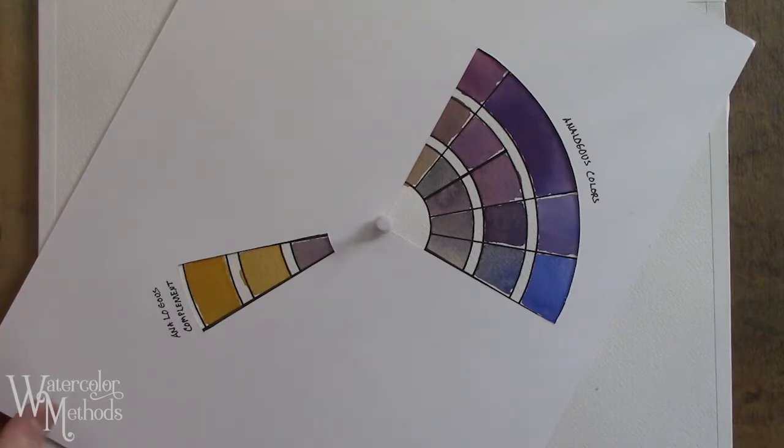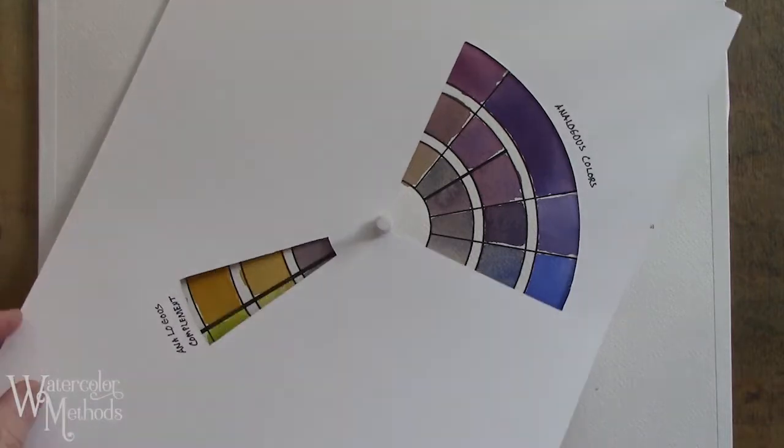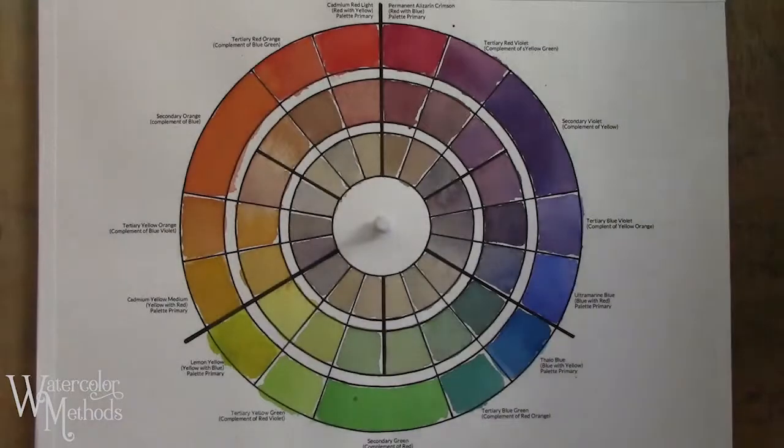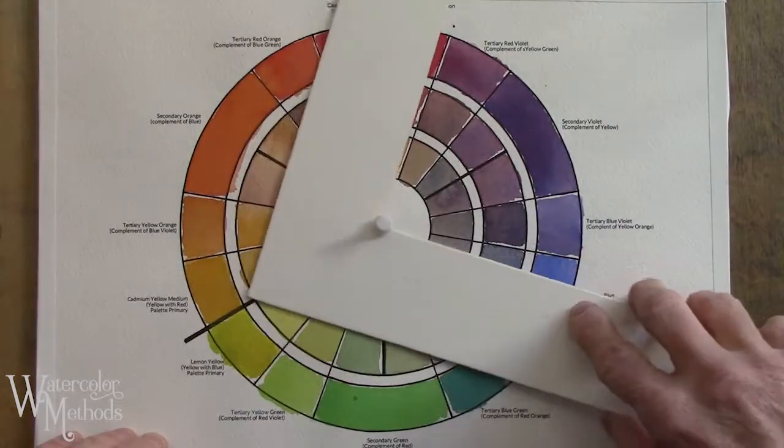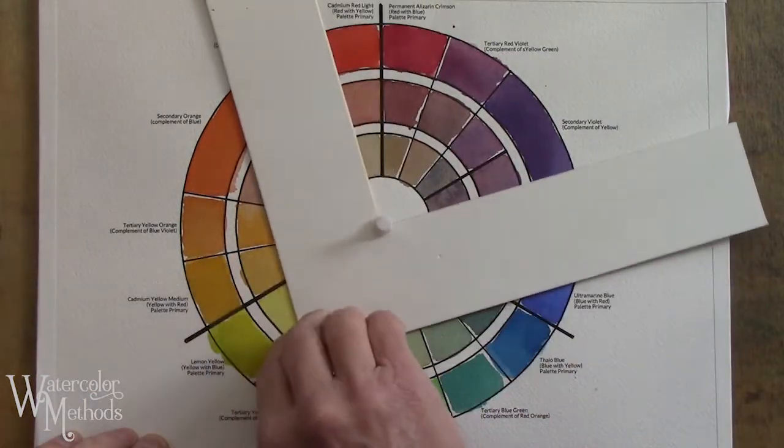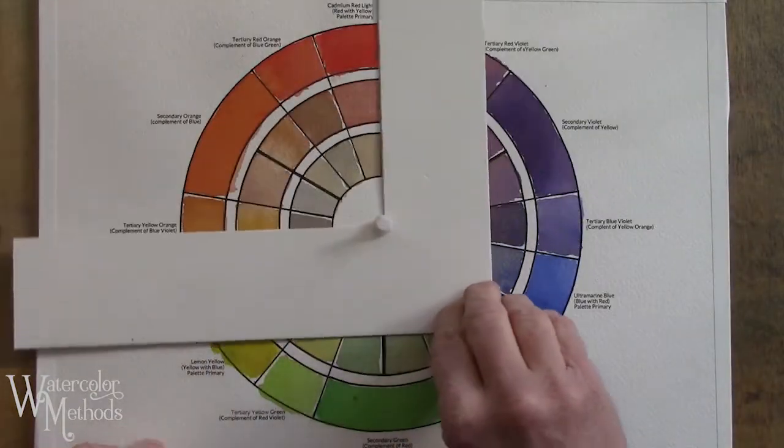So really, those are the basics for the analogous color scheme and the analogous color scheme with complement. If you've got a color wheel and you can make yourself a cutout template like this or get yourself a piece of mat board like this to isolate different color schemes, I'd encourage you to play with them.